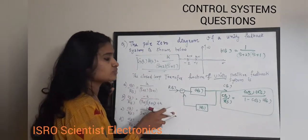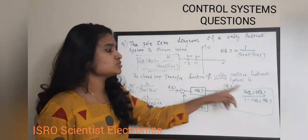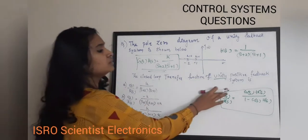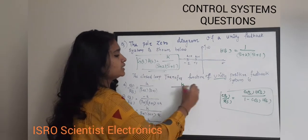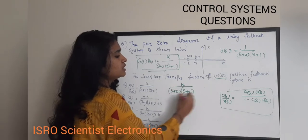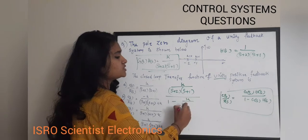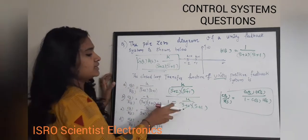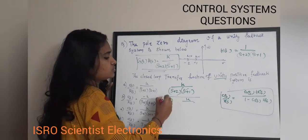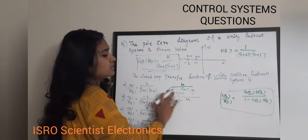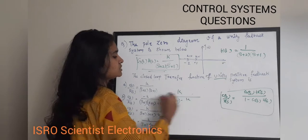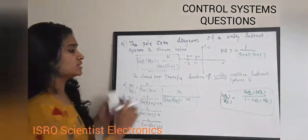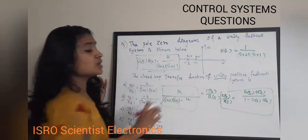To find the closed loop transfer function, we substitute G(s)·H(s) into the formula. So C(s)/R(s) = [K / (s+2)(s+1)] / [1 - K / (s+2)(s+1)]. Taking (s+2)(s+1) as common in the denominator, this simplifies to: C(s)/R(s) = K / [(s+2)(s+1) - K].